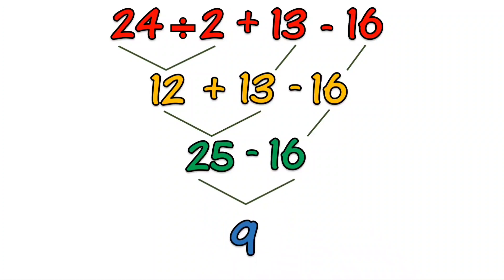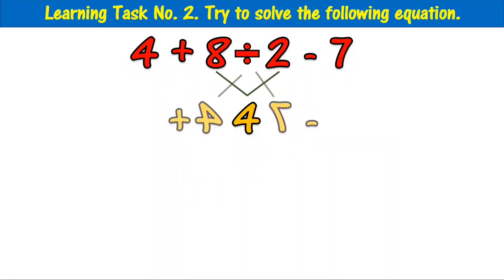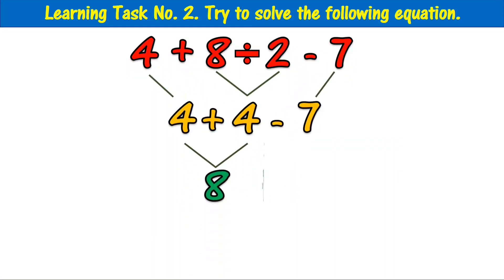Try to solve this equation: 4 plus 8 divided by 2 minus 7. The answer is 1.